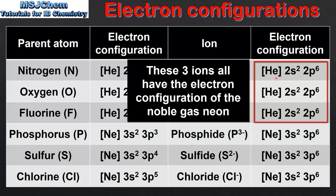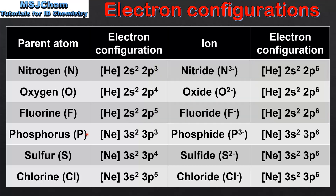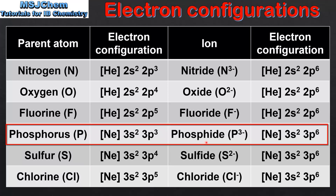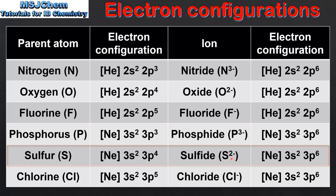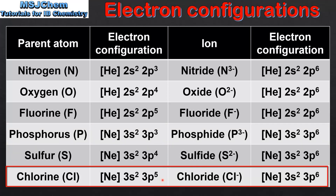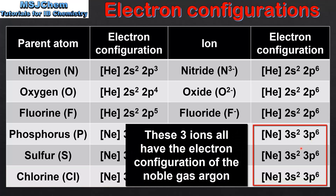The fluoride ion has the same electron configuration as the oxide ion and the nitride ion, which means these three ions are isoelectronic. The next three examples are Phosphorus, Sulphur and Chlorine. Phosphorus gains 3 electrons to form the phosphide ion which has a 3- charge. Sulfur gains 2 electrons to form the sulfide ion which has a 2- charge. And Chlorine gains 1 electron to form the chloride ion which has a 1- charge. These three ions also have the same electron configuration, therefore they are isoelectronic.